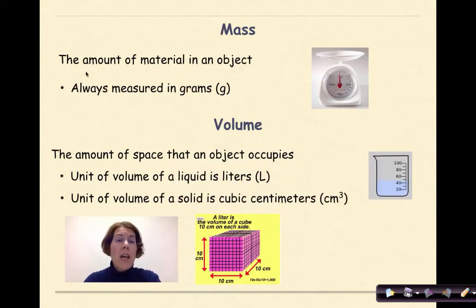Mass is defined as the amount of material in an object, and it's always measured in grams or kilograms depending on your situation. Volume is the amount of space that an object occupies. The unit of volume of a liquid is the liter. The unit of volume of a solid is cubic centimeters, as represented right here.